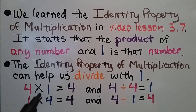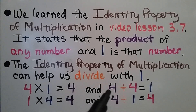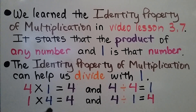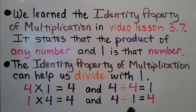4 times 1 is equal to 4, and 4 divided by 4 is equal to 1. 1 times 4 is equal to 4, and 4 divided by 1 is equal to 4.